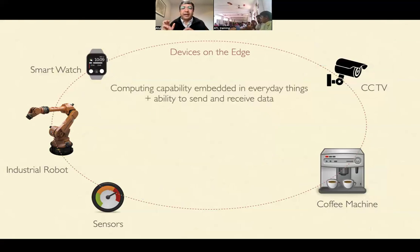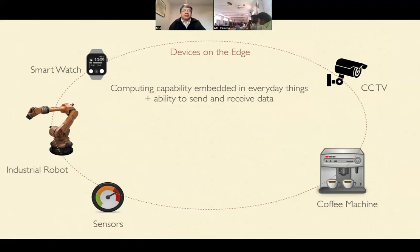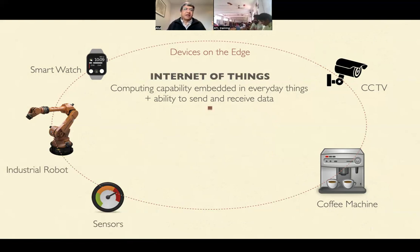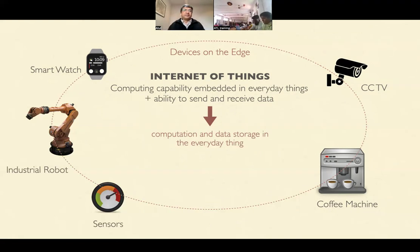When we talk about embedding computing ability in everyday things, devices on the edge could be the smart watch you have, a smart CCTV, or even refrigerators and coffee machines these days — they have some level of intelligence built in. You get all kinds of smart bulbs now that you can control. When devices on the edge have some sort of intelligence, that is what we call Internet of Things. They can take decisions, do computation, and store data. This is called edge computing.